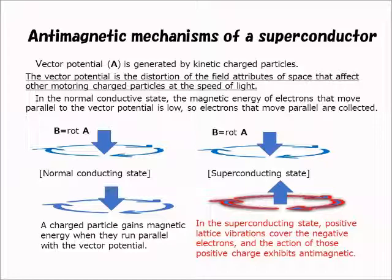In the normal conductive state, the magnetic energy of electrons that move parallel to the vector potential is low, so electrons that move parallel are collected. In the superconducting state, positive lattice vibrations cover the negative electrons, and the action of those positive charges exhibits an antimagnetic effect.